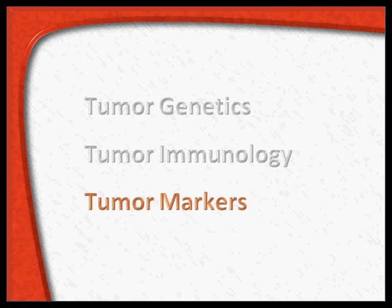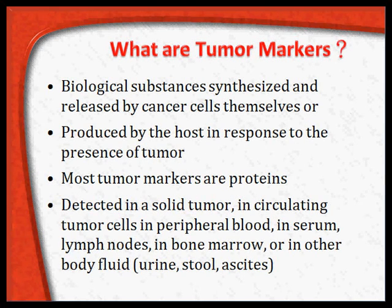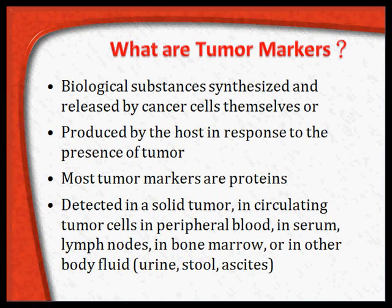Hitherto we have seen some basics of tumor genetics and tumor immunology. Now we are going to look at tumor markers, which is today's topic. Tumor markers are biological substances synthesized and released by the cancer cells themselves, or they may be produced by the host in response to the presence of the tumor. Basically they can be derivatives of the cancer cells themselves or derivatives of the host cell in response to the presence of tumor.